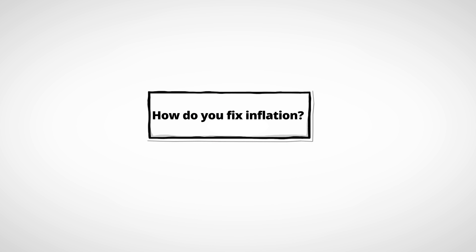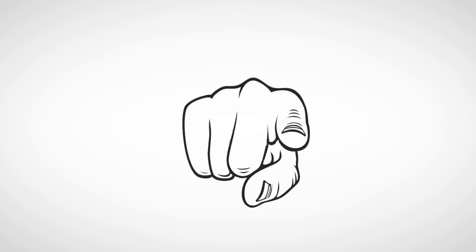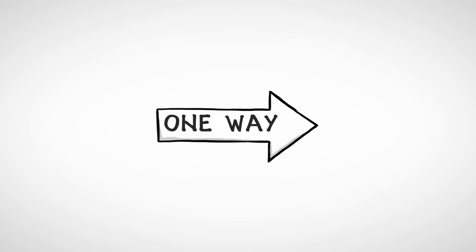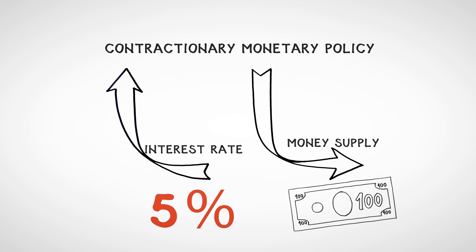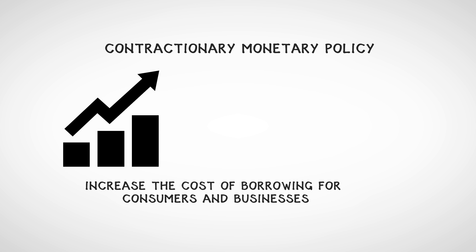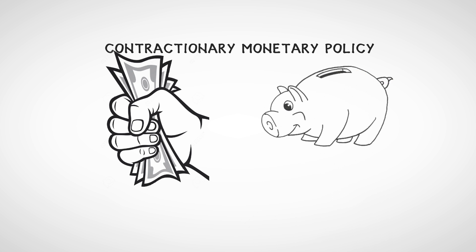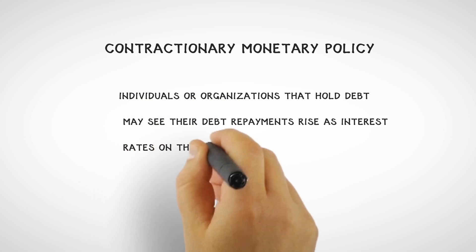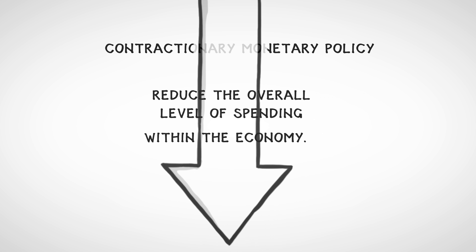How do you fix inflation? You target changes in aggregate demand, as you have less control over aggregate supply. One way to reduce aggregate demand is to raise the interest rate or decrease the money supply — this is called contractionary monetary policy. These methods will increase the cost of borrowing for consumers and businesses. What's more, the opportunity cost of holding money will rise and drive people to save more. Individuals or organizations that hold debt may see their repayments rise as interest rates increase. These effects combined can reduce the overall level of spending within the economy.